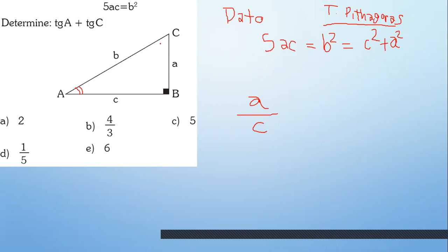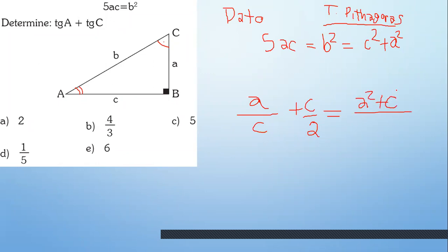¿La tangente de C qué sería? Opuesto sobre adyacente. No te han dado los valores, pero puedes hacer la operación de fracciones, suma de fracciones. A cuadrado más C cuadrado sobre el producto de denominadores: A por C.